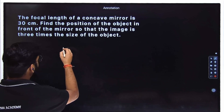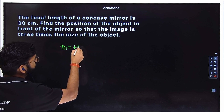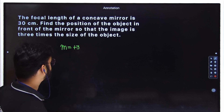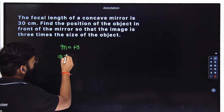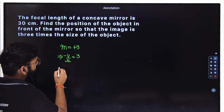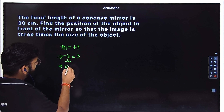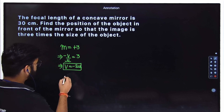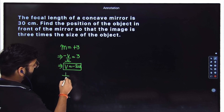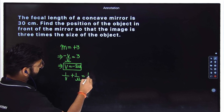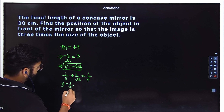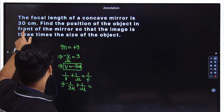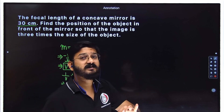For magnification as plus three, the image formed is virtual, erect and magnified. The magnification of a mirror is minus V by U, so from here we get V equal to minus three U. Let's apply the mirror formula: one by V plus one by U equal to one by F. Substituting V as minus one by three U, we get minus one by three U plus one by U equal to one by F. The focal length is 30 centimeter — but the question is whether it is plus 30 or minus 30 for a concave mirror.